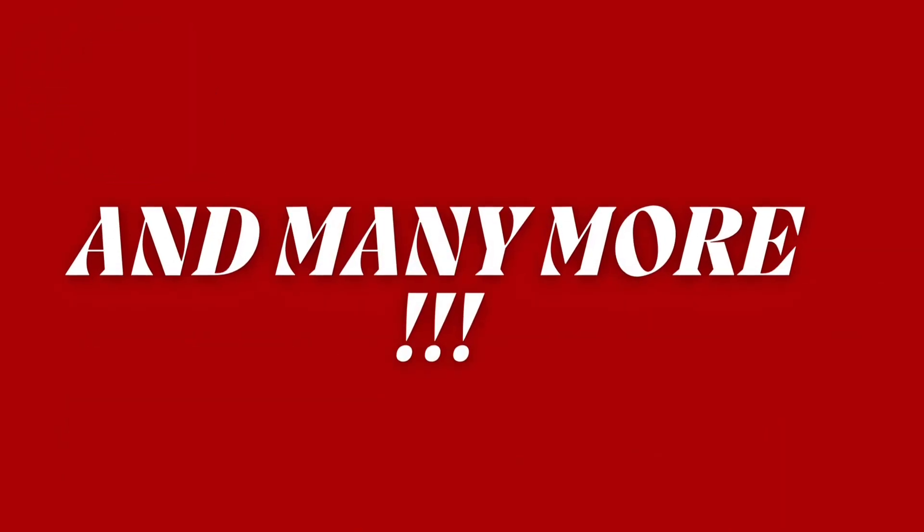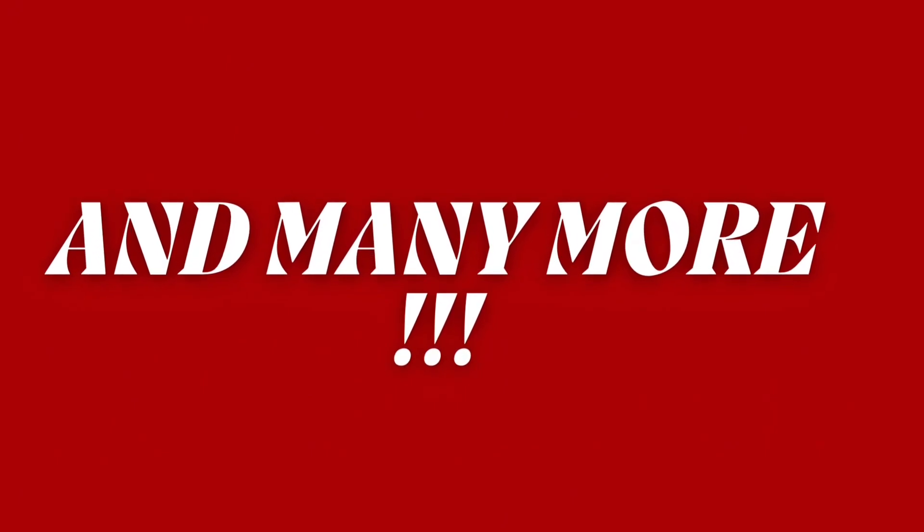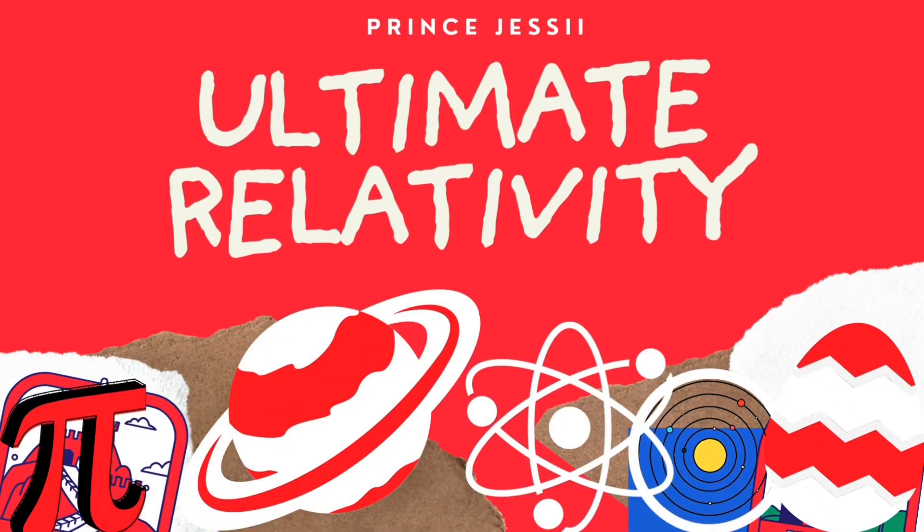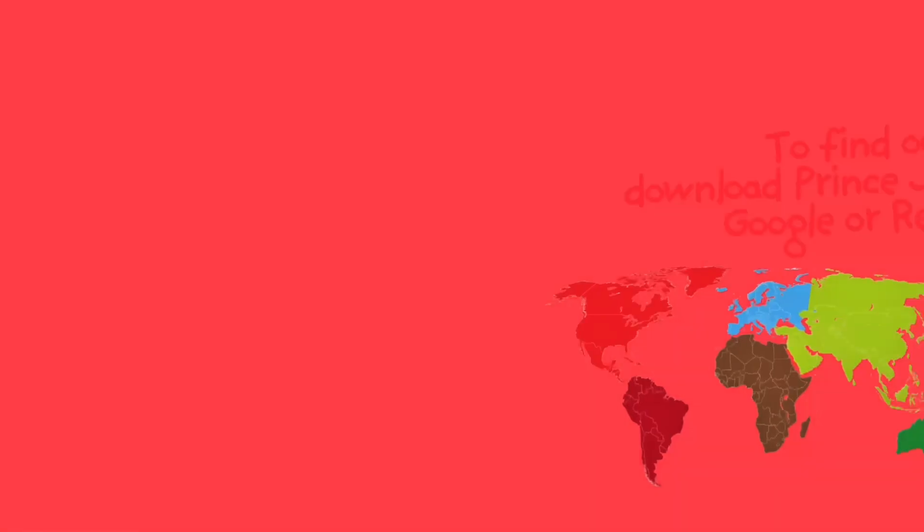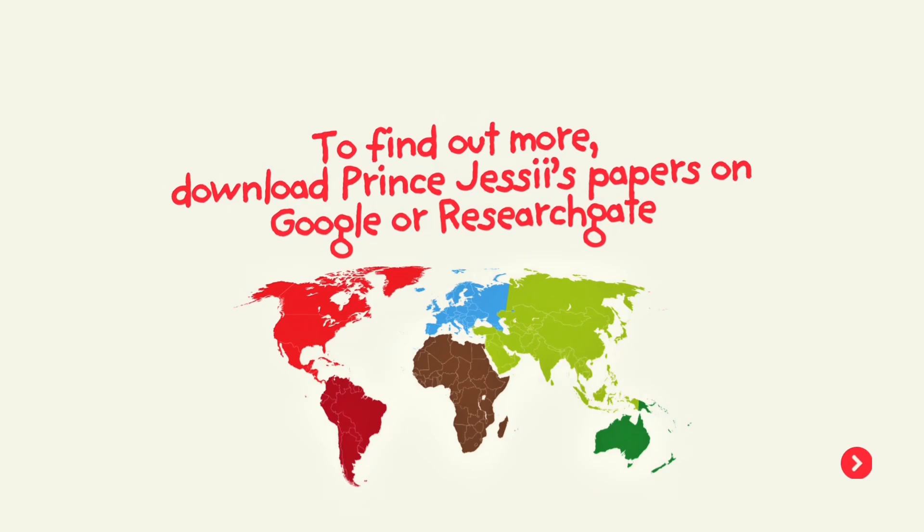In addition, there are still more lies to be exposed. Subscribe and check us out on the next episode. All these are under the theory, Ultimate Relativity, proposed by Prince Jesse. Check it out. You can read more about this Prince Jesse's discoveries by downloading Prince Jesse's scientific papers on the link below.